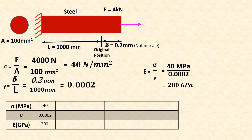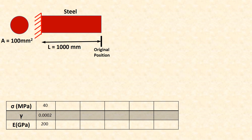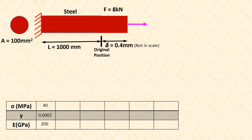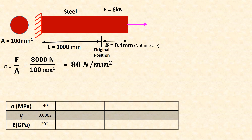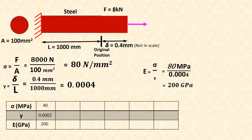When force is removed, steel returns back to original position. Now double the force to 8 kN — elongation also doubles: delta equals 0.4 mm. Sigma is 80 MPa, gamma is 0.0004, Young's modulus is 200 GPa — same value. Remove the force, returns back to original position.